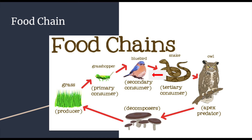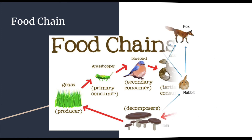Then the blue bird eats the grasshopper to gain its energy. Again, some energy is always lost to heat. The snake eats the blue bird and the owl eats the snake. Finally, the decomposer breaks down the owl and puts nutrients back into the soil for the producers to once again make energy, and the chain keeps cycling around.